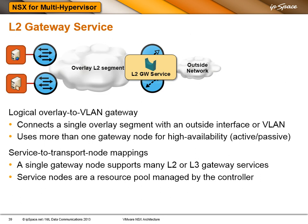A single gateway node — the physical box — can support many services, but they all have to be either layer 2 or layer 3. And you configure which gateway services run on which gateway node.